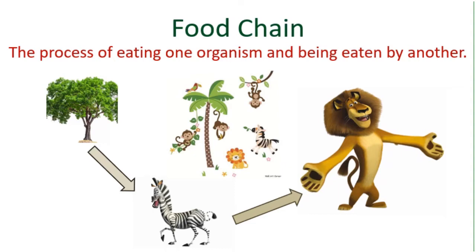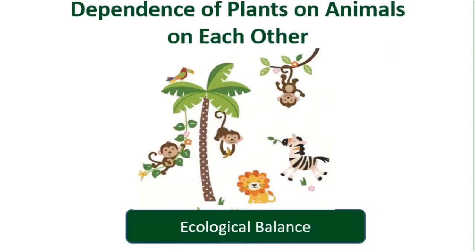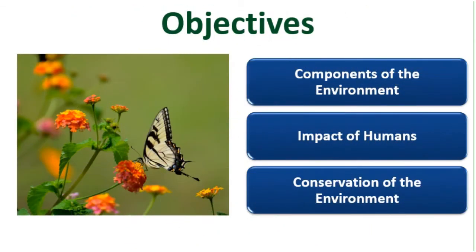Plants and animals are dependent on each other for survival and for the ecological balance. In this second module, we will be talking about the environment and its components, how humans are impacting the environment, and the steps being taken both nationally and internationally to protect and conserve our environment.